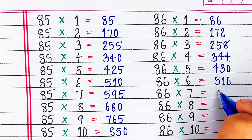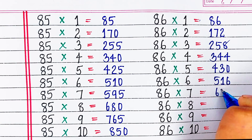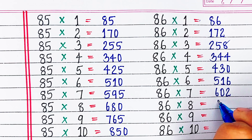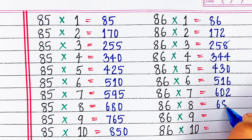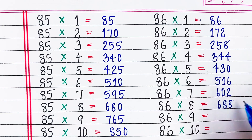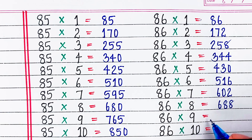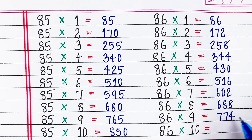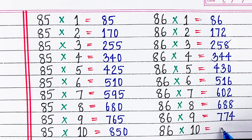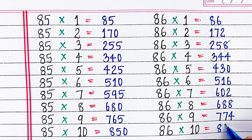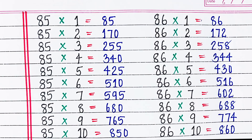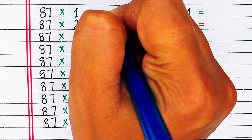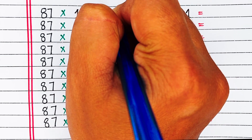86 6s are 516, 86 7s are 602, 86 8s are 688, 86 9s are 774, 86 10s are 860.